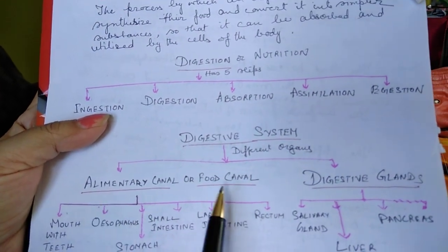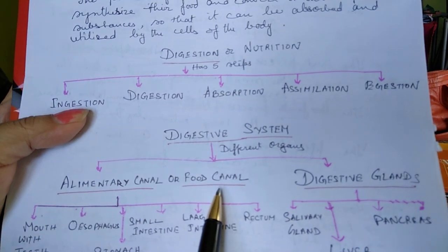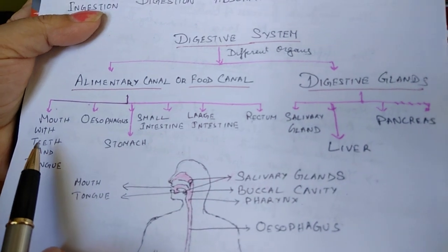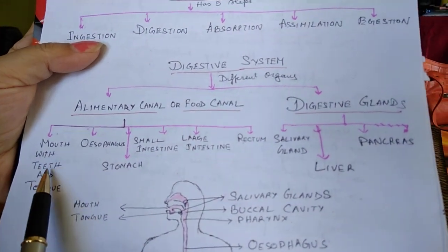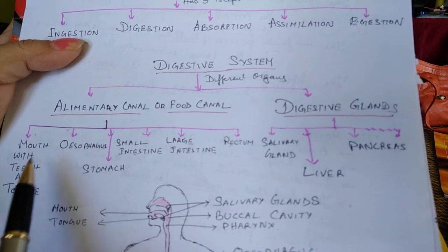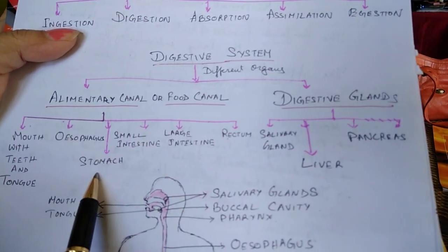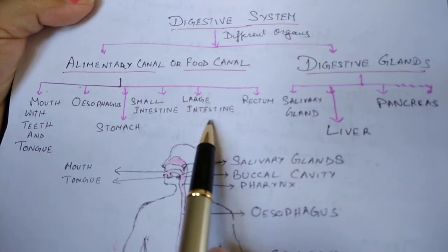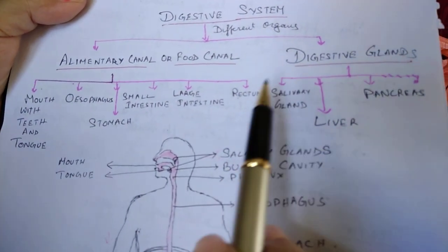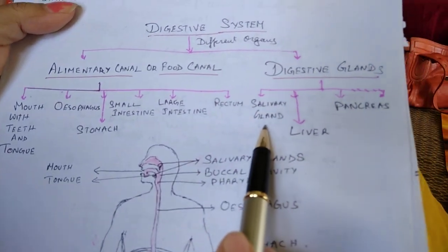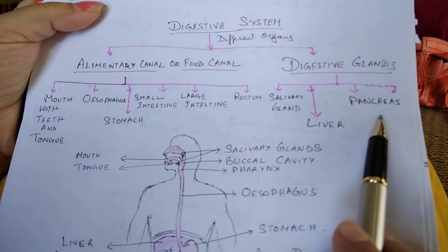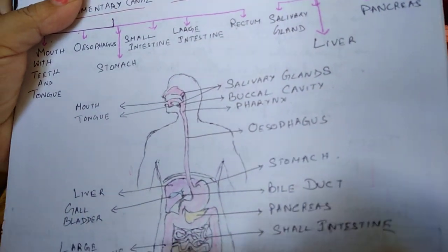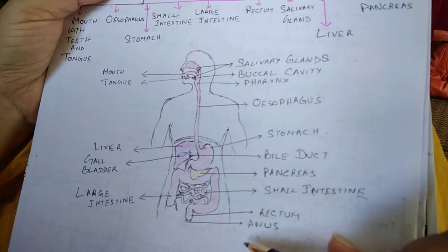The organs are the alimentary canal, also called the food canal, and the digestive glands. The alimentary canal is divided into different parts: the mouth with teeth and tongue, the esophagus, the stomach, the small intestine, the large intestine, and the rectum. The digestive glands are the salivary glands, the liver, and the pancreas.